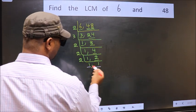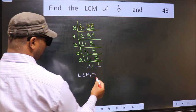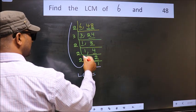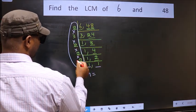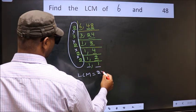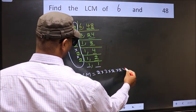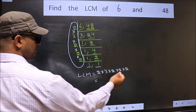We got 1 in both places. So our LCM is the product of these numbers. That is 2 into 3 into 2 into 2 into 2.